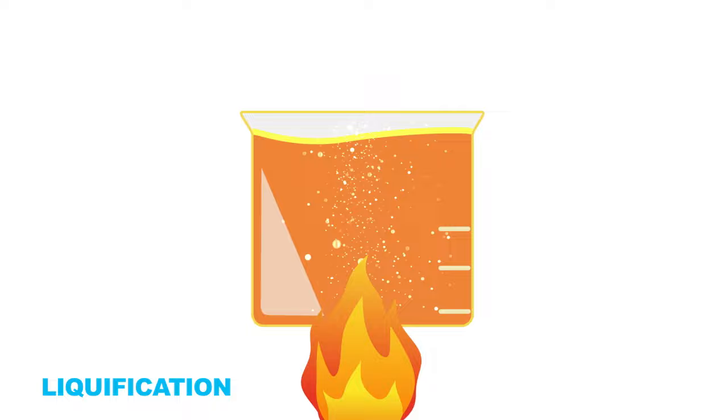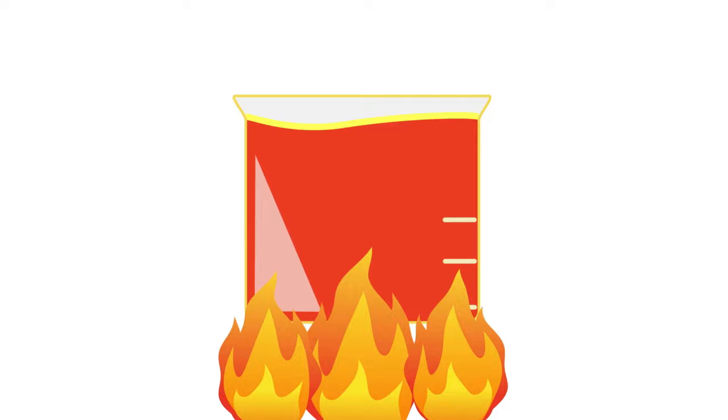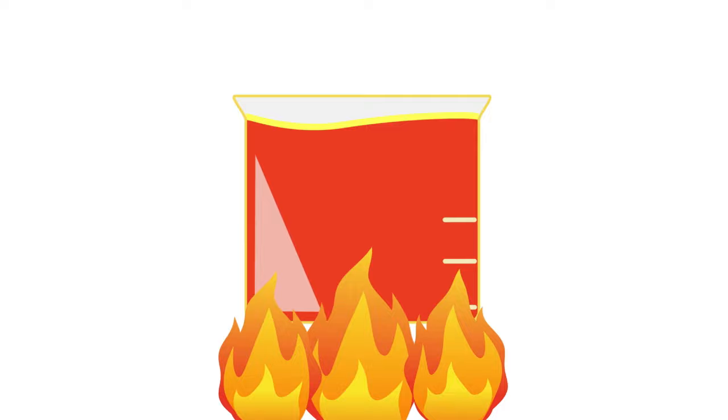After this liquefaction process, more heat is added to cook the mash, which kills unwanted bacteria. The mash is then cooled to around 90 degrees and sent to fermentation vessels.